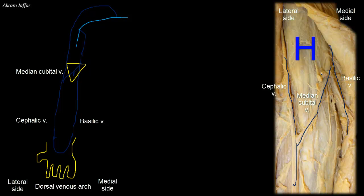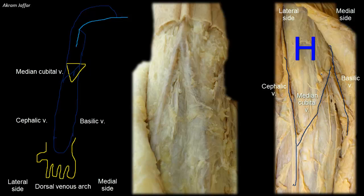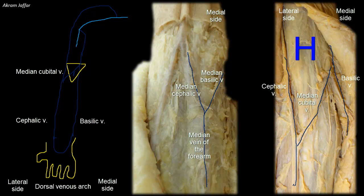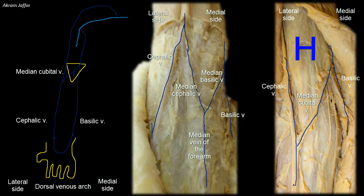The arrangement of the veins in the roof of the cubital fossa is in the form of a capital H. In some people, in the presence of a median vein of the forearm — which drains the front of the wrist and the forearm — this median vein will divide at the roof of the cubital fossa into a median basilic and a median cephalic vein, giving a capital M arrangement instead. Here you can see the cephalic vein joined by a median cephalic vein on the lateral side, and the basilic vein joined by the median basilic vein on the medial side.